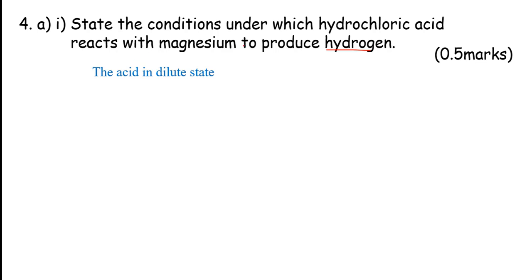We shall always produce hydrogen with magnesium using dilute hydrochloric acid because concentrated is likely to be highly reactive. So we prefer using the acid in dilute state.